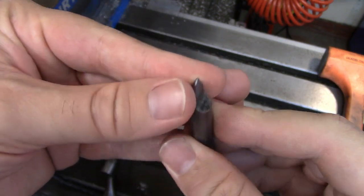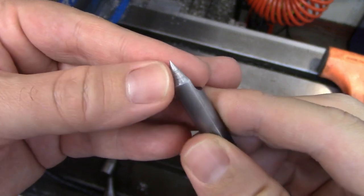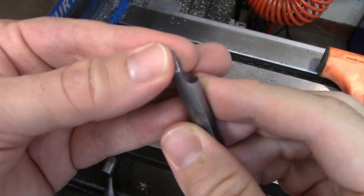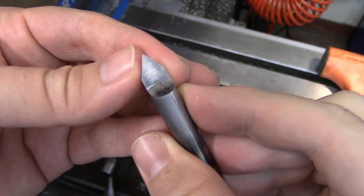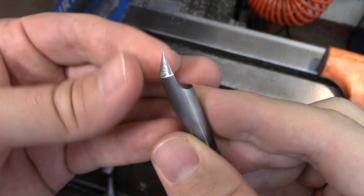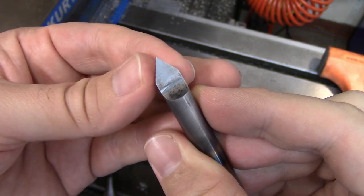Ideally too, you would want to have some kind of relief back here, similar to a countersink. But I don't have an easy way of doing that. And I don't want to try freehand grinding it and then ending up screwing up the point or making the point off-center. That would be bad.